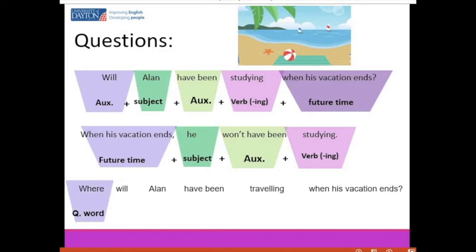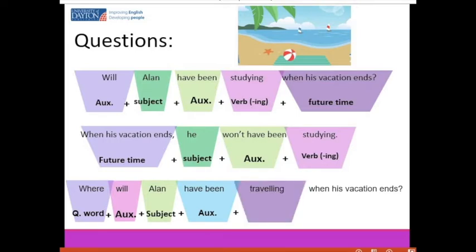For information questions, we begin with a question word — for example, 'where' — followed by the auxiliary 'will,' then the subject Alan, then 'have been,' then a verb ending in -ing, and a future time. 'Where will Alan have been traveling when his vacation ends?' Pay attention to the words 'Alan' and 'traveling' — 'Where will ALAN have been TRAVELING when his vacation ends?'